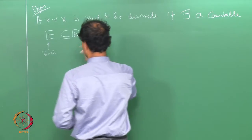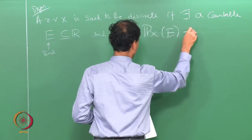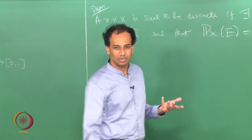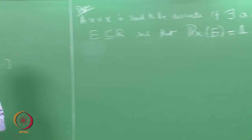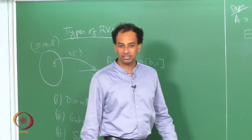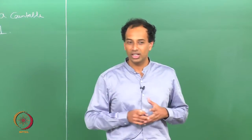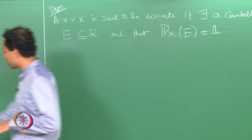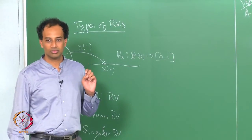A discrete random variable is one which puts all its probability — with probability 1 — on a countable set. There exists some countable set E whose pre-image has probability 1. In other words, X takes values in a countable set E = {e_1, e_2, ...} with probability 1. There may be some omega in a set of probability 0 that maps outside E, which is why we say the range is not necessarily just a countable set.